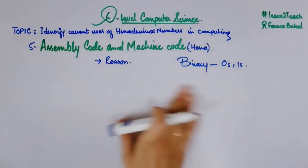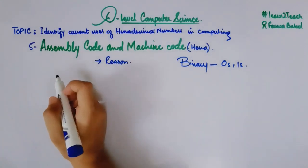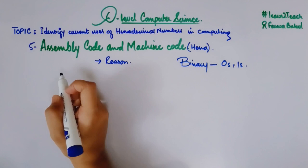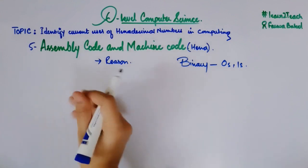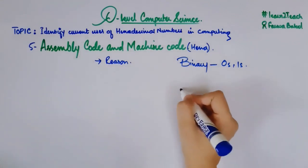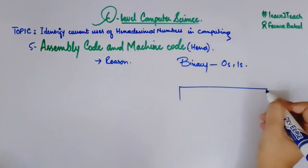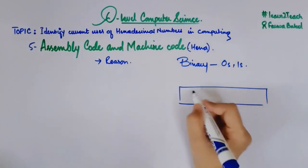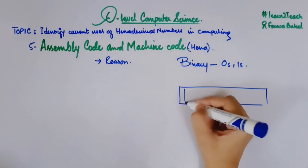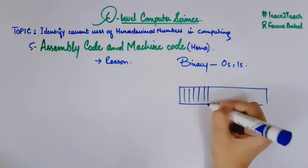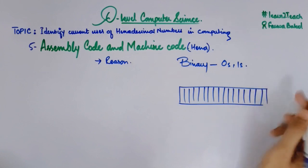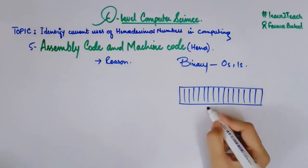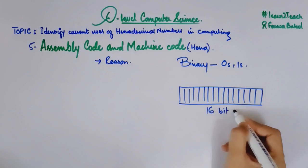Let me give you an example so that it will be clear what I am trying to explain. So let's suppose I have an accumulator. An accumulator is a kind of register. For example, one, two, three, four, five, six, seven, eight — one, two, three, four, five, six, seven, eight. Let's suppose I have a 16-bit accumulator.